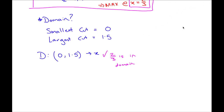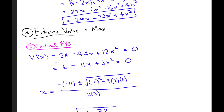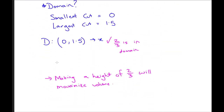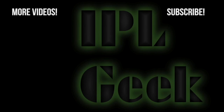We can make the final conclusion: making a height of 2/3 inches will maximize the volume of the box. And let's not forget our units — it's 2/3 inches — since this is a real-world problem. That's our conclusion, step 5. If you found this video helpful, please like, share, subscribe, leave a comment, and check out some other videos. See you next time.